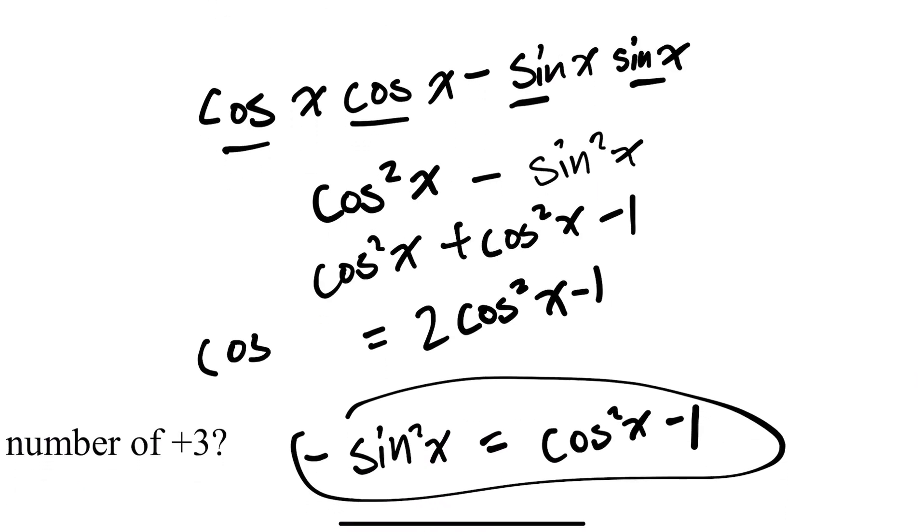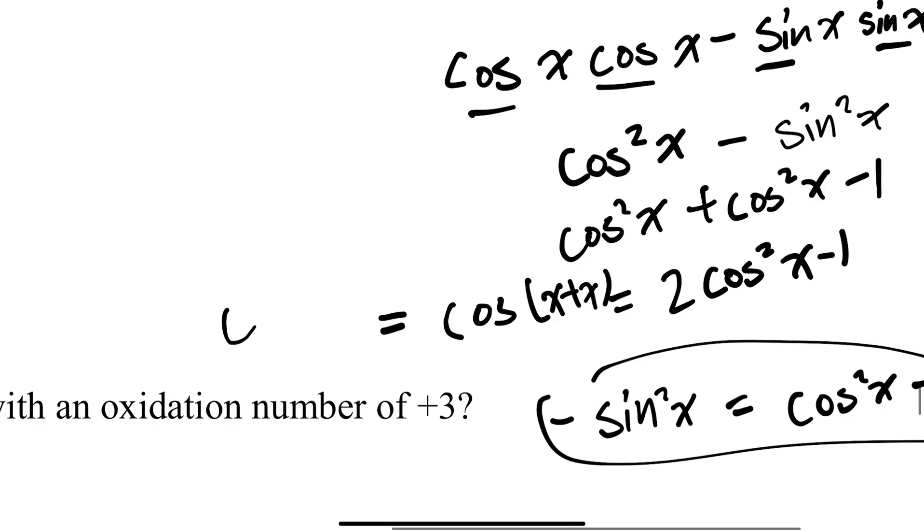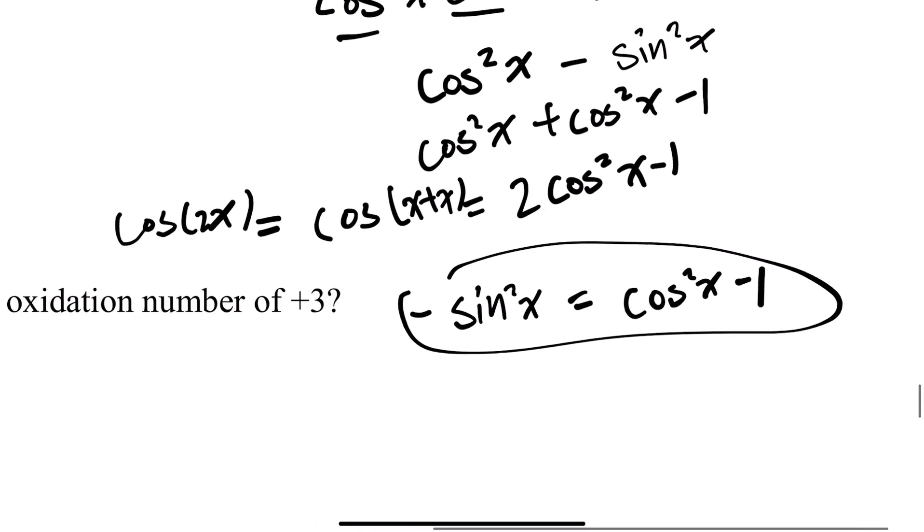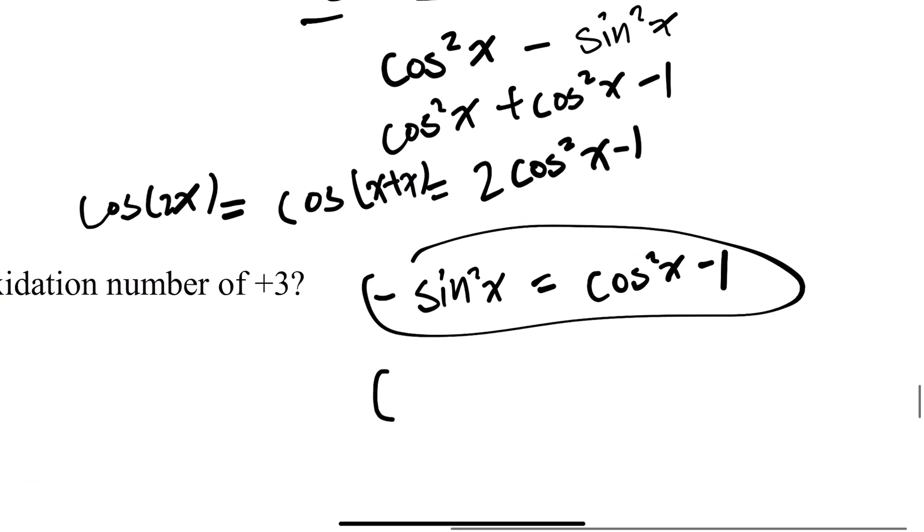And this was cosine x plus x, which is cosine 2x. Hence, cosine 2x equals 2 cosine squared x minus 1.